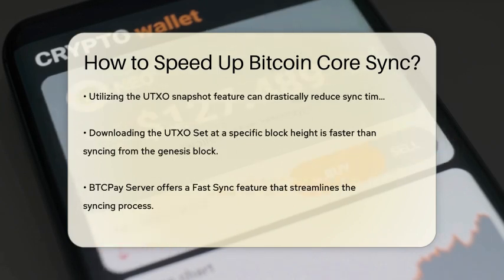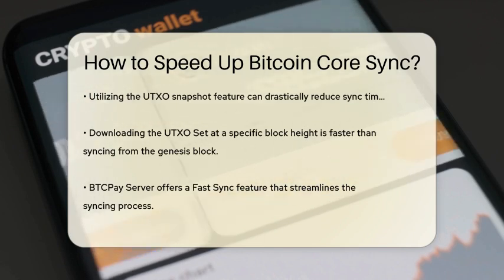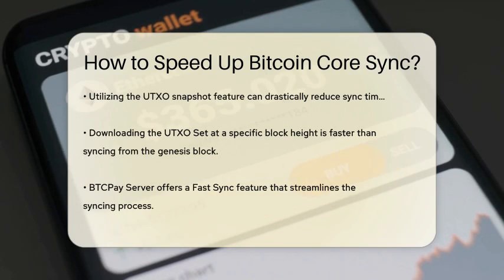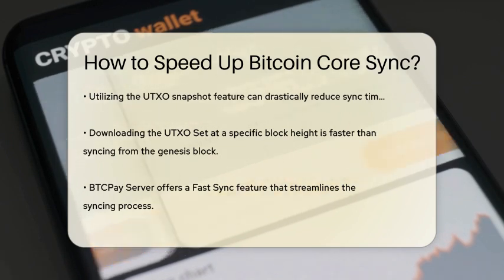Another approach is to use the UTXO snapshot feature. This method involves downloading the current state of the Bitcoin network, known as the UTXO set, at a specific block height, rather than syncing from the genesis block. This can reduce the synchronization time from days to just a few hours. For instance, with BTCPay Server, you can use the Fast Sync feature, which downloads the UTXO set and then syncs only the latest blocks from that point.